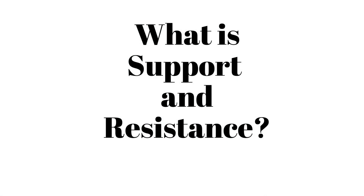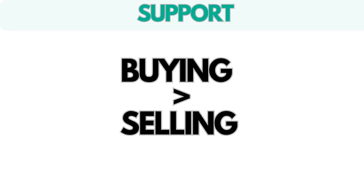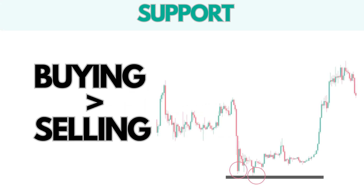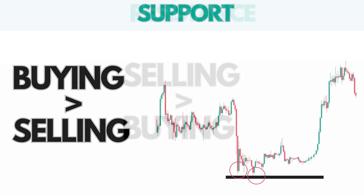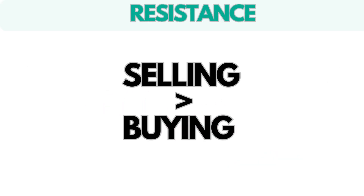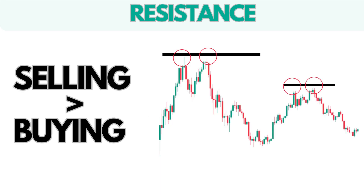Let's begin by understanding what support and resistance levels are. Support refers to a price level where buying pressure typically exceeds selling pressure, causing the price to halt its decline. On the other hand, resistance is a price level where selling pressure often surpasses buying pressure, causing the price to halt its ascent.